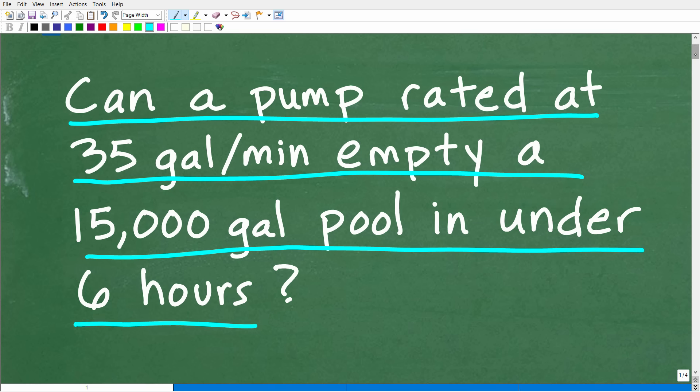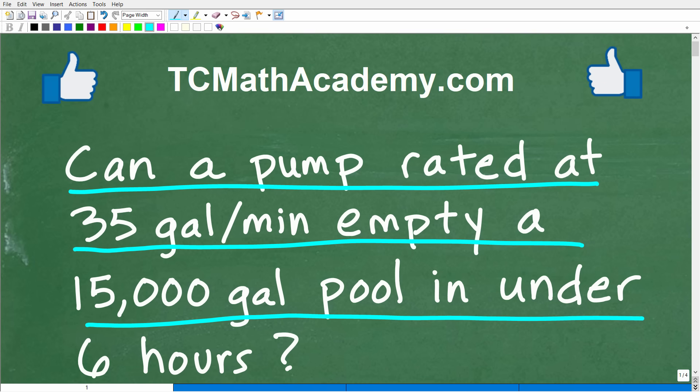Can a pump rated at 35 gallons per minute empty a 15,000 gallon pool in under 6 hours? Okay, so that is the question. Feel free to use a calculator. But if you can figure this out, go ahead and put your answer into the comment section.